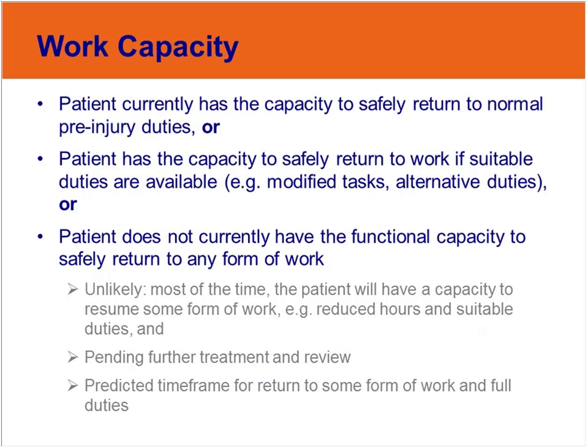Once the assessment has reached this stage, we are able to make some decisions with the patient about return to work. Generally speaking there are three decision nodes. First, the patient currently has the capacity to safely return to normal pre-injury duties. Second, the patient has the capacity to safely return to work if suitable duties are available — including modified tasks, alternative duties, or a temporary placement in a different job. Third, the patient does not currently have the functional capacity to safely return to any form of work. This third option is generally unlikely, as most patients will have the capacity to resume some form of work, potentially involving suitable duties and reduced hours.